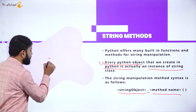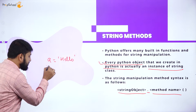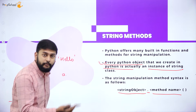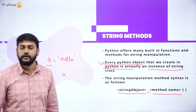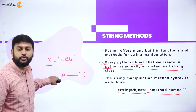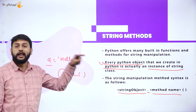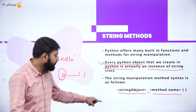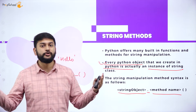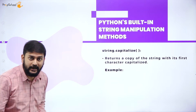For example, if I have a = 'hello', then 'a' is the string object. I write a.method_name and that performs the desired operation on the string content. You should remember: first the string object, then the dot operator, then the method name. Let's start with the first method.